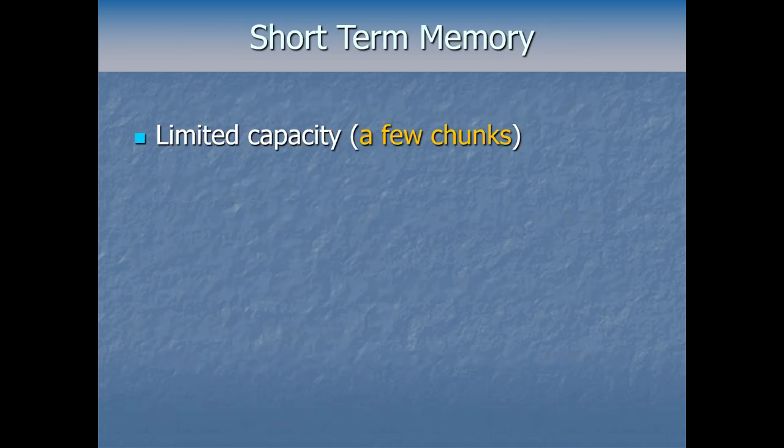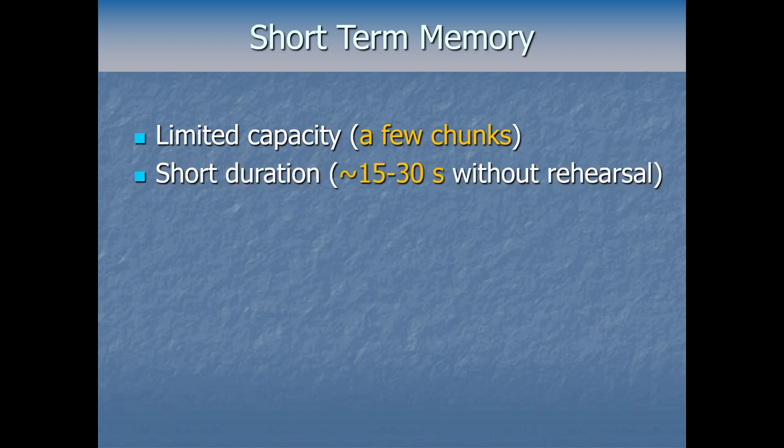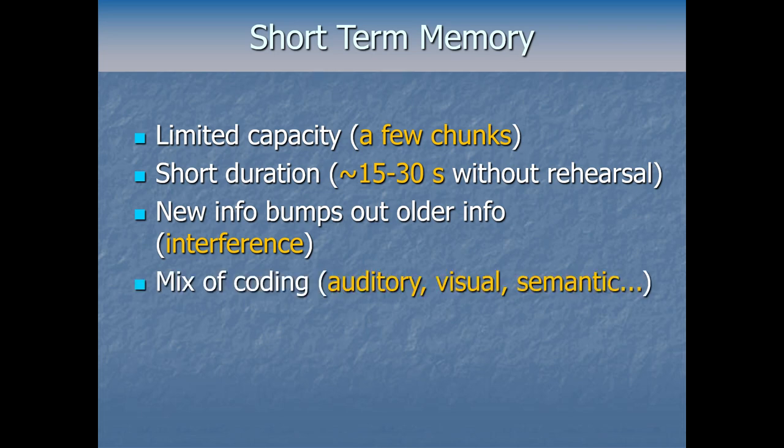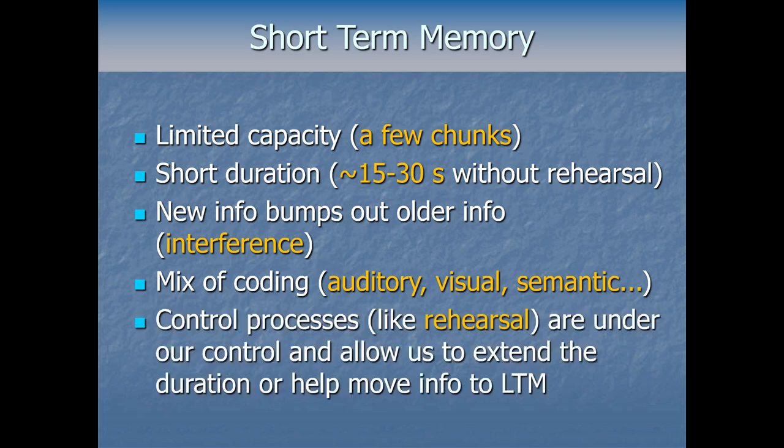So just to summarize what we've learned about short-term memory: its capacity is limited to a few chunks, like three to four is a common number that you'll hear. It's got short duration, generally 15 to 30 seconds if we're not allowed to rehearse indefinitely. New information bumps out older information. So a sort of interference seems to explain a lot of our forgetting rather than a pure time-based decay mechanism. It stores things in a mix of codes or file formats, so to speak. And there are certain control processes, things like rehearsal, which are under our control and allow us to extend the duration or to help move the information to long-term memory, which remember could be like remembering something five minutes later, not just five days or five years later. Long-term memory is basically anything else, anything longer than this limited short-term store.